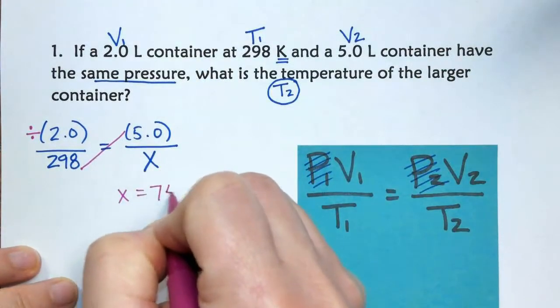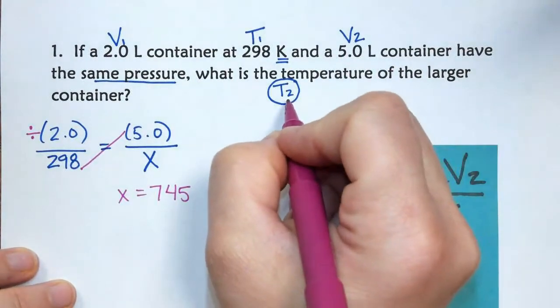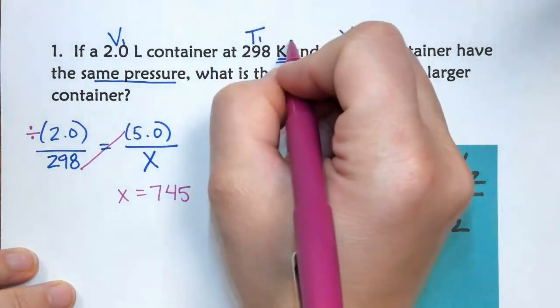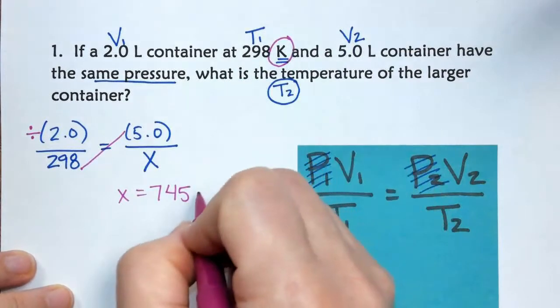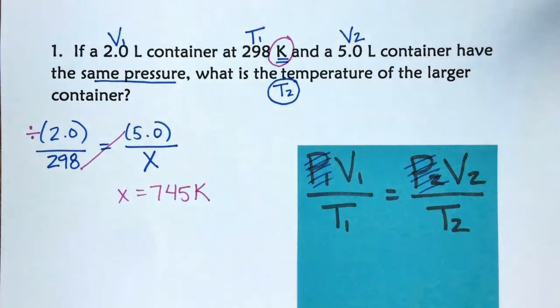X equals 745. T2 will have the same unit as T1, since T1 was in Kelvin, that means this answer is also in Kelvin.